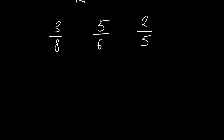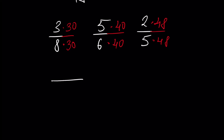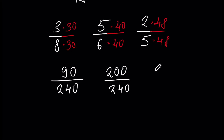We multiply the first fraction by 30, the second fraction by 40, and the third fraction by 48. In all cases the value of the fractions will stay the same. The first fraction will be 90 over 240, the second fraction will be 200 over 240, and the third fraction will be 96 over 240.